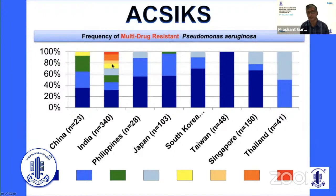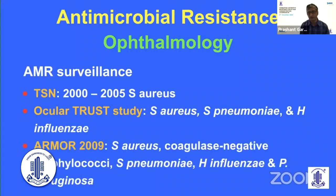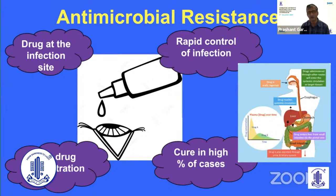Similar studies have been published from the United States as antimicrobial surveillance programs — the first was the Surveillance Network, followed by the Ocular TRUST study, and more recently in March 2020, the ARMOR study results were also published.